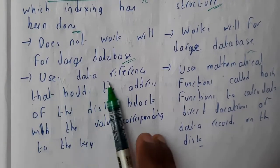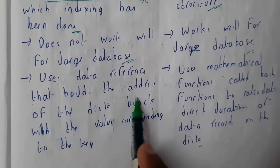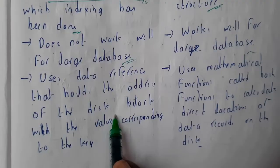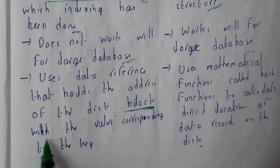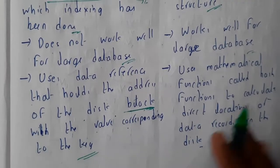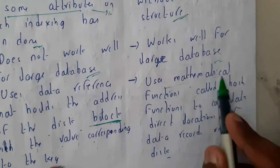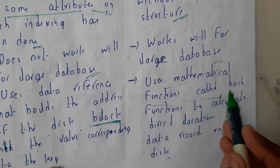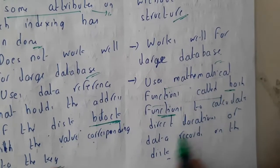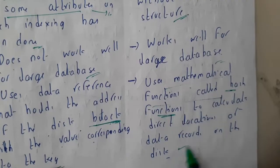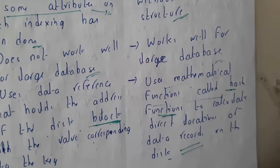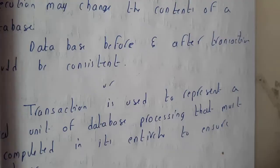Indexing uses data references that hold the address of the disk blocks, with values corresponding to particular keys. Whereas hashing uses a mathematical function called a hash function to calculate the different locations of the data records on disk.